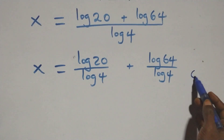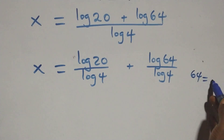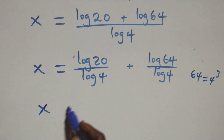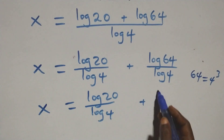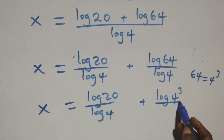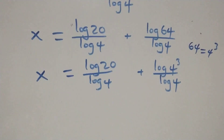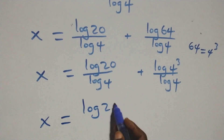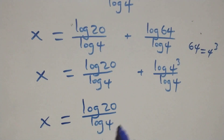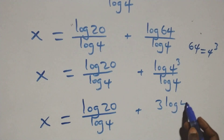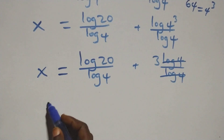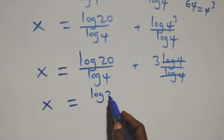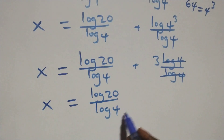At this, we apply the power log rule. We express 64 as 4 times 4 times 4, that is 4 to power 3. So we have x equals to log 20 over log 4 plus 3 times log 4 over log 4. Here log 4 cancels each other, and this becomes x equals to log 20 over log 4 plus 3.